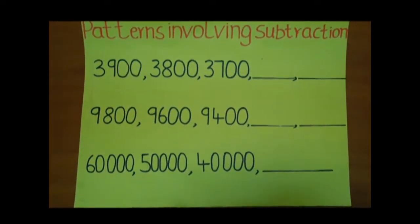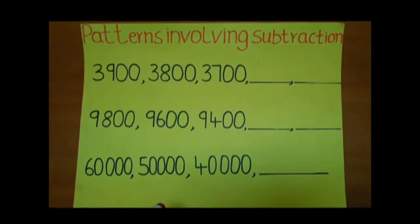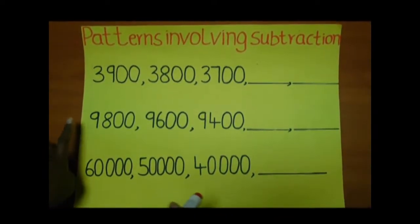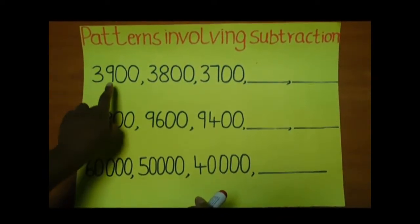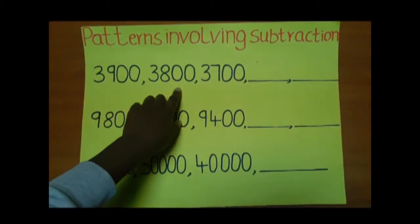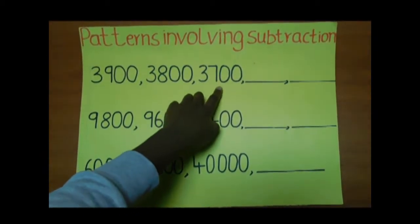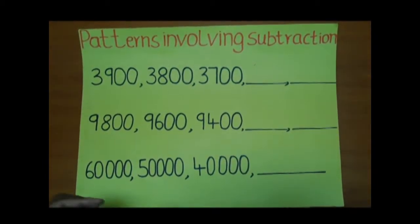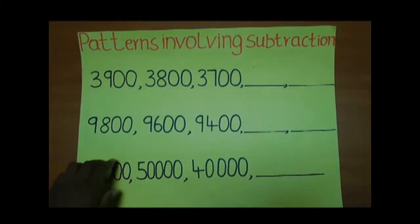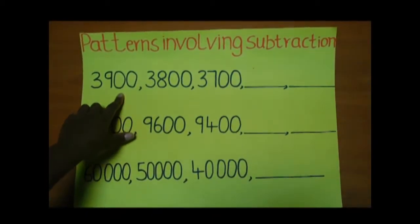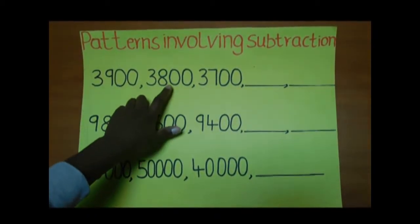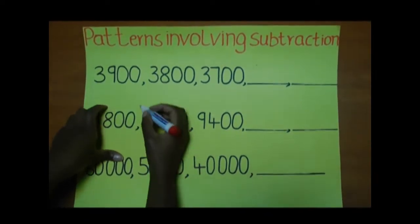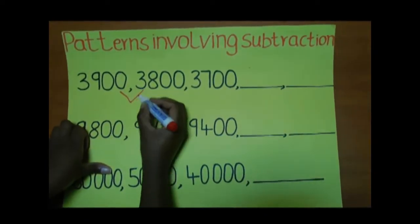We are going to learn about patterns involving subtraction. Our first pattern is 3900, 3800, 3700, dash and dash. We want to find the difference between 3900 and 3800. The difference is 100.